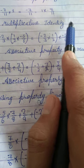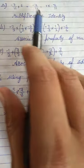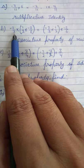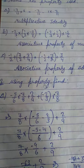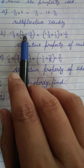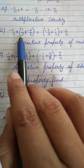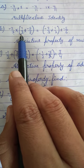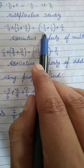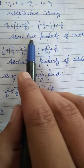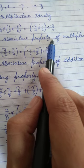Next: minus 2 multiplied by 1/2 multiplied by minus 5 over 6. It is very clear that this is the associative property of multiplication of the rational numbers.